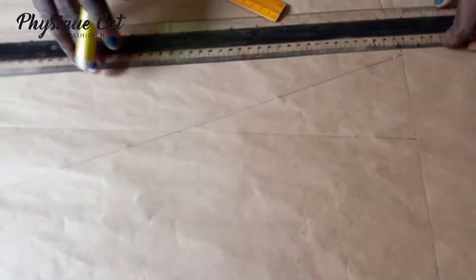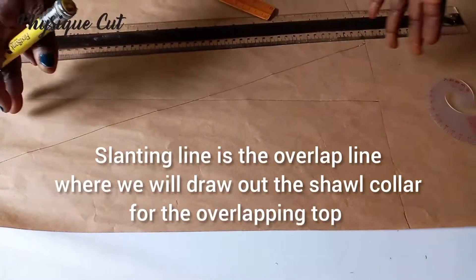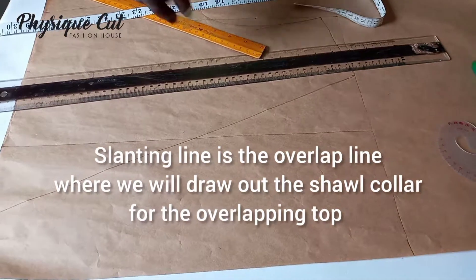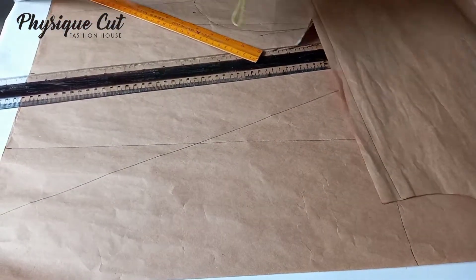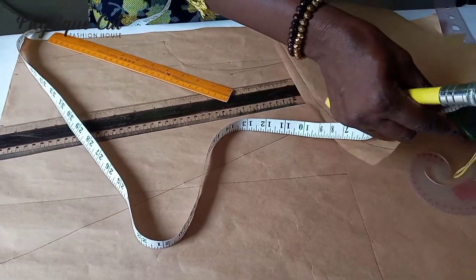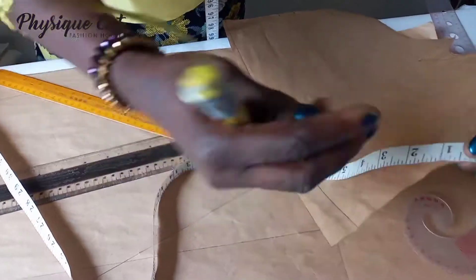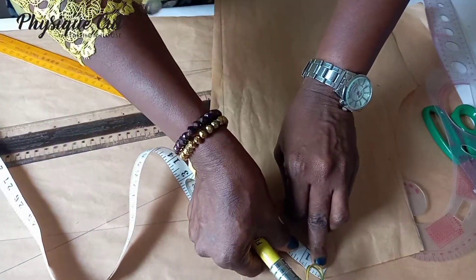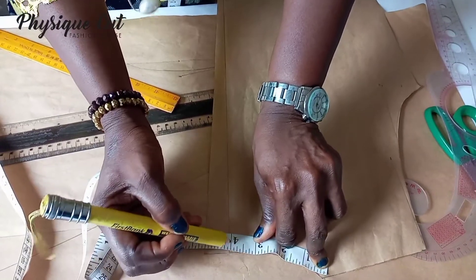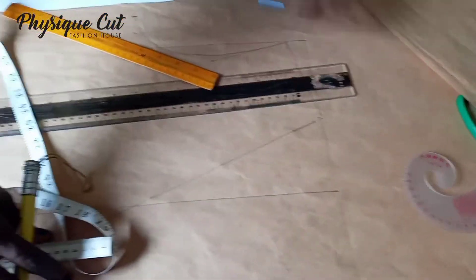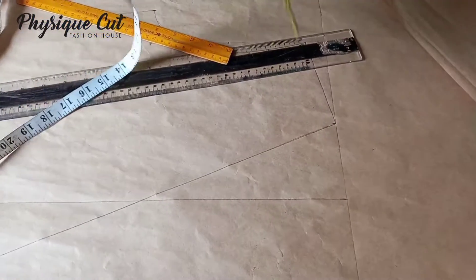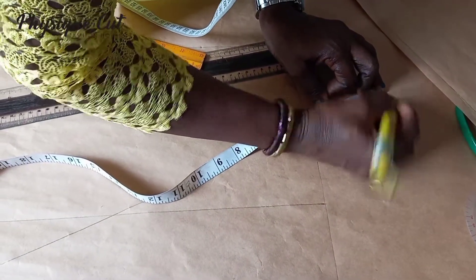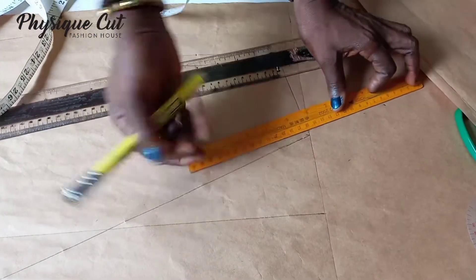To get the shawl collar now, you take the back cut of your overlapping top. You measure what you have here at the neck. As you measure it with your tape, you can see it's four inches. So it is that four inches now that you are going to get from this place. You get four inches, you mark it.